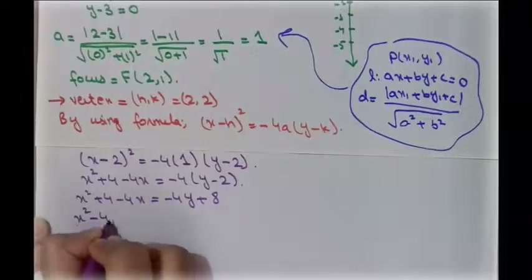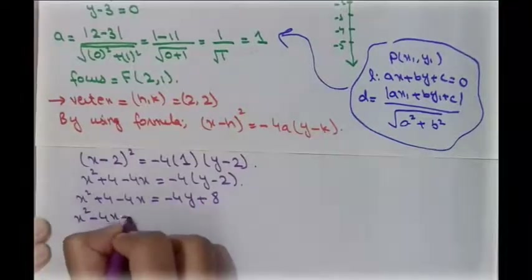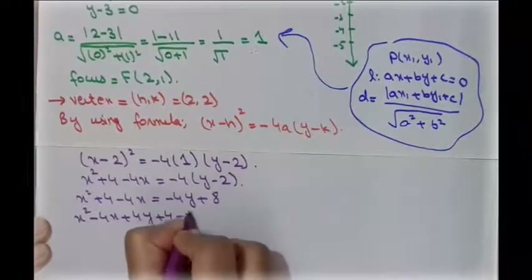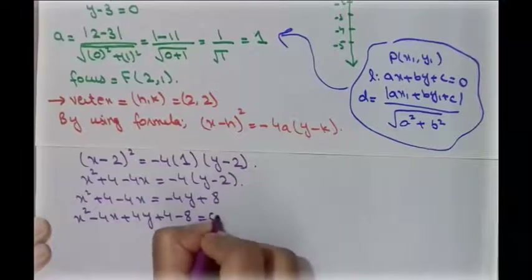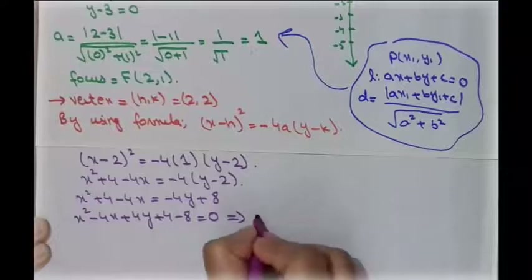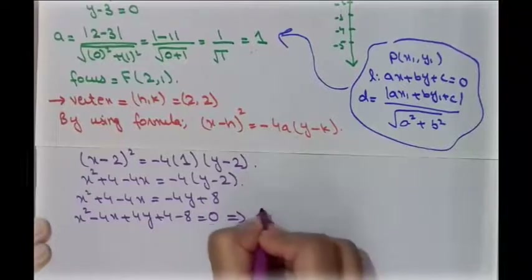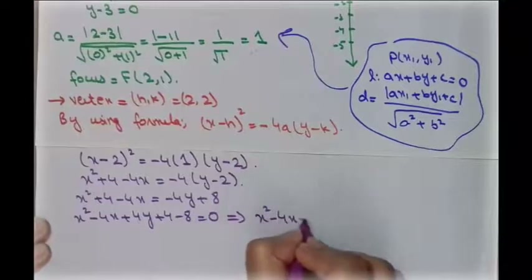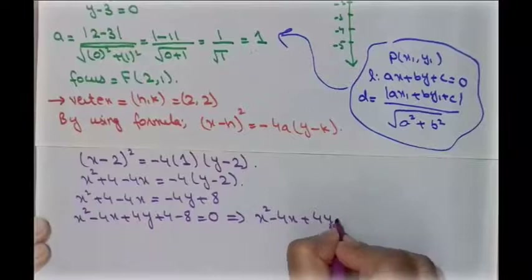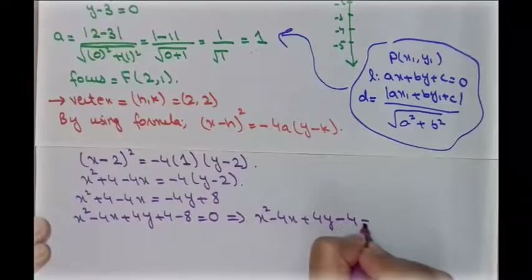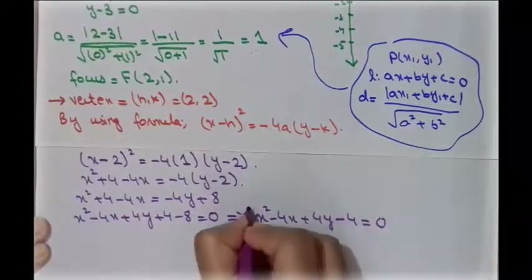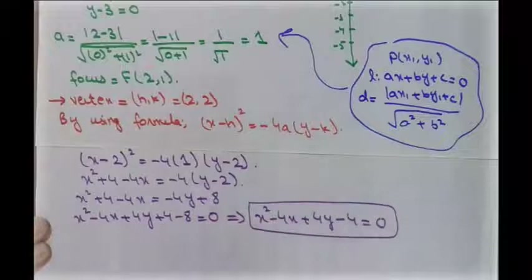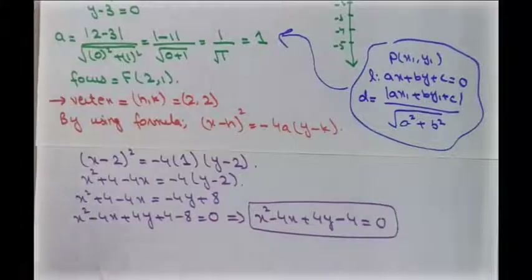Rearranging: x² − 4x + 4y + 4 − 8 = 0, which gives x² − 4x + 4y − 4 = 0. This is the required equation of the parabola.